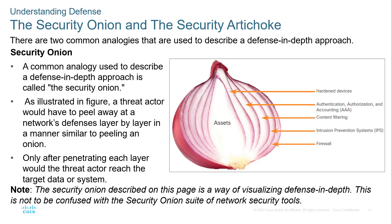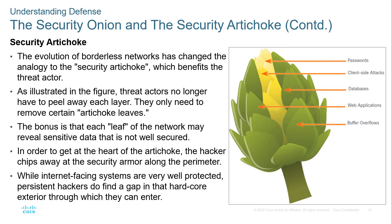One growing concept is the 'artichoke' analogy. Essentially, some protections — like those around a password system — may not be as adequate as they should be. To access just that part of the system, you can peel back the protection much like an artichoke. You don't have to defeat the entire thing — you can just remove the leaves that are preventing you from accessing the area you want.